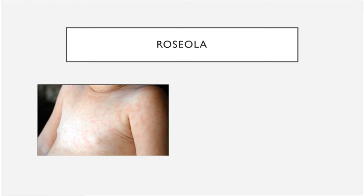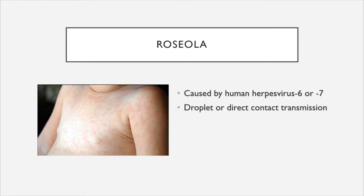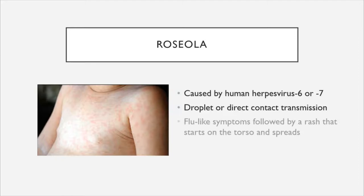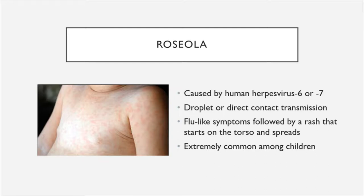Our next disease is roseola, caused by human herpesvirus 6 or 7, although HHV-6 is the more common cause. It is transmitted by droplet transmission or direct contact with salivary excretions of an infected person. It is associated with flu-like symptoms that develop initially, followed by a rash that begins on the chest and stomach and then spreads to the limbs. It is extremely common among young children and considered to be very contagious.